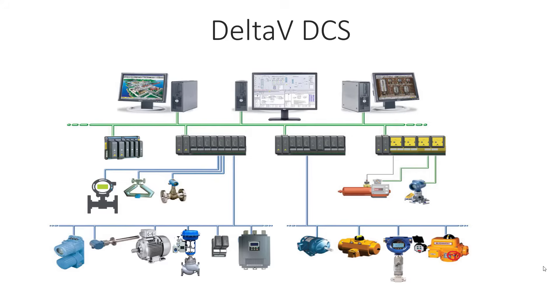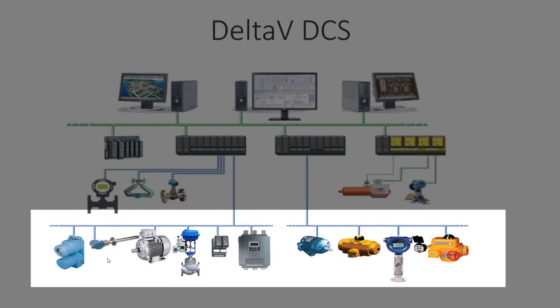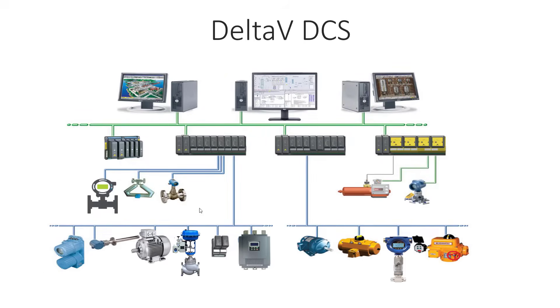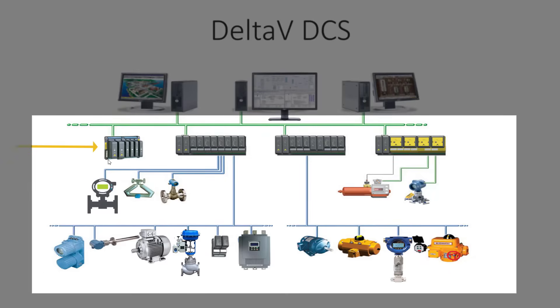We will start our discussion from the field level. You can see this architecture — focus on this side where the cursor is at the field level. Here you have different instruments like temperature, pressure, level, and flow transmitters, as well as control valves, fans, electrical motors, transformers, and VFDs. All these devices are connected to the Delta V DCS cabinet via wires going into the DCS network.